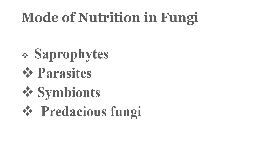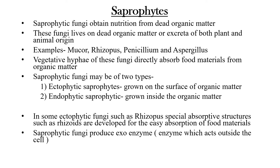The various modes of nutrition in fungi include saprophytes, parasites, symbiotes, and predacious fungi. Saprophytic fungi obtain nutrition from dead decaying organic matter — they live on dead decaying organic matter or excreta of plant or animal origin. Examples include Mucor, Rhizopus, Penicillium, and Aspergillus. Vegetative hyphae of these fungi directly absorb food materials from the organic matter. Saprophytic fungi may be of two types: ectophytic saprophytes, which grow on the surface of organic matter, and endophytic saprophytic fungi, which grow inside the organic matter.